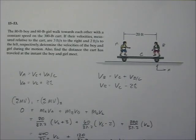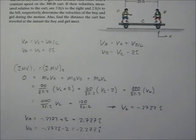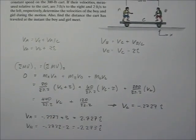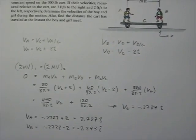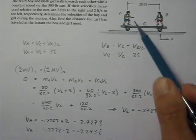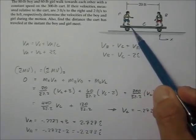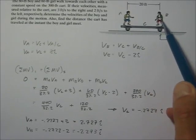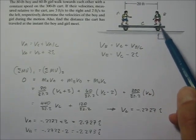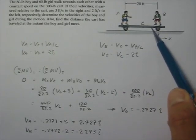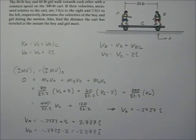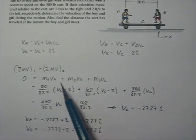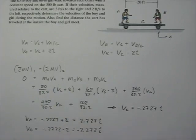I now have two relative equations but three unknowns, so I can't solve yet. Let's use the momentum equation. The sum of the beginning momentums equals the sum of the ending momentums. We know this applies because there are no external forces. The force the boy exerts on the cart is equal and opposite to what the cart exerts back on the boy — same with the girl. They are not interacting with each other yet, so conservation of momentum applies. Beginning momentum is zero — they're all starting from rest.